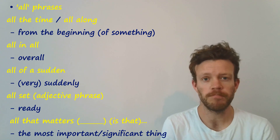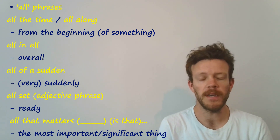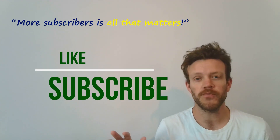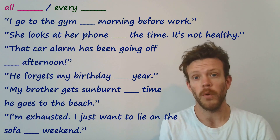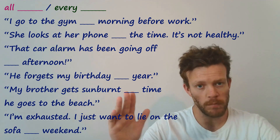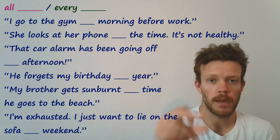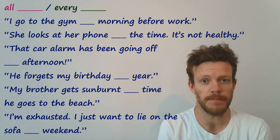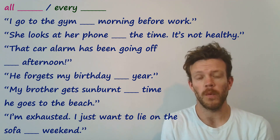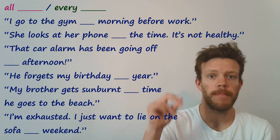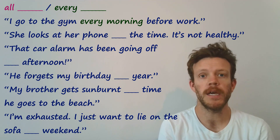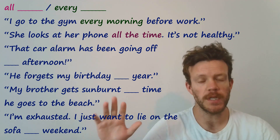Hopefully those are useful for you. If you've learned something in this video and you haven't done so already, do make sure to subscribe. That's really all that matters to me. But when you're ready, let's practice and improve. Just pause the video and put either 'all' — to talk about constantly — or 'every' — to talk about without exception — into these sentences. Well done if you said: 'I go to the gym every morning before work.' And 'she looks at her phone all the time' — constantly.